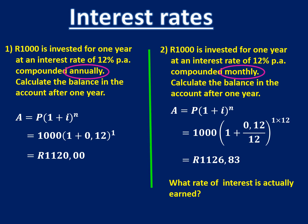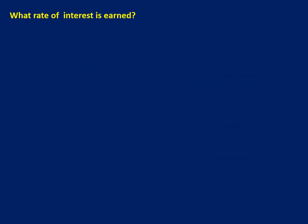To work out how much interest we're actually earning, we take our 1,126 Rand and 83 cents as our final amount, and 1,000 Rand as our initial deposit, and then calculate what interest we're actually earning. Taking our answer to the previous question as our A amount, and 1,000 Rand as what went into the bank account.